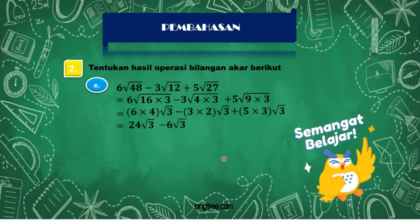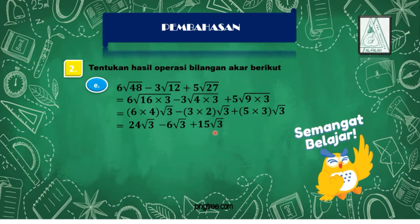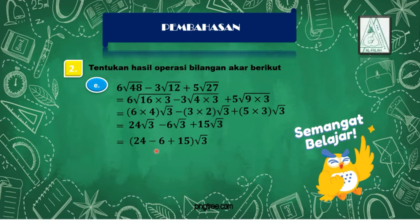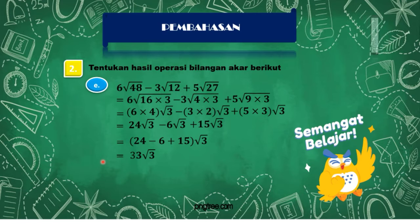Lalu kita kalikan: 6 kali 4 adalah 24 akar 3, lalu 3 kali 2 adalah 6 akar 3, 5 kali 3 adalah 15 akar 3. Nah disini kita lihat apakah bentuk akarnya sama — ya, bentuk akarnya sama, masing-masing mempunyai akar 3. Jika akarnya sama maka bisa kita jumlah dan kurangkan: 24 dikurangi 6 ditambah 15 akar 3. 24 dikurangi 6 adalah 18, ditambah dengan 15, maka hasilnya adalah 33 akar 3.